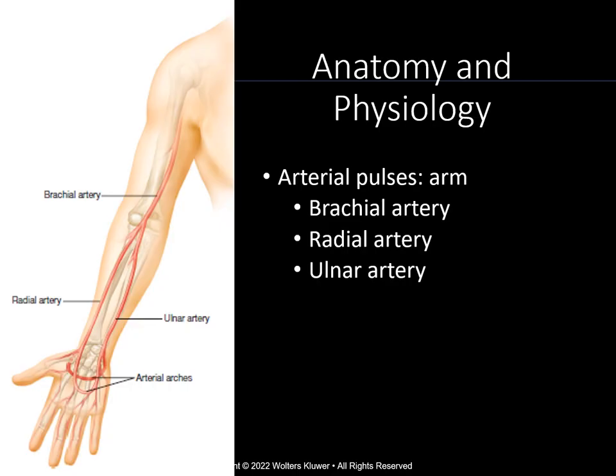I just wanted to quickly review a little anatomy and physiology with you. This is a representation of the arterial pulses in the arm. You can see the brachial artery which runs medial down the arm. It then branches into the radial and ulnar arteries. The radial artery is usually easily palpable along the inner aspect of the wrist, aligning with the thumb.